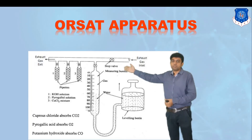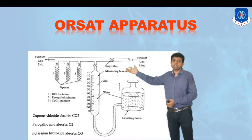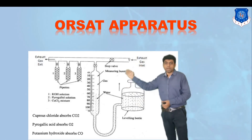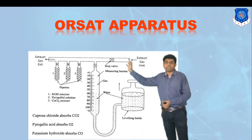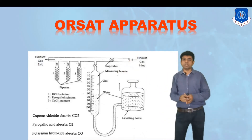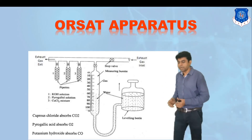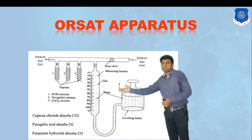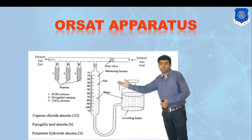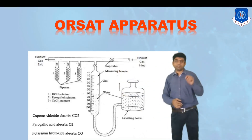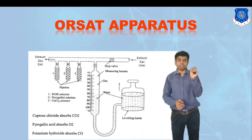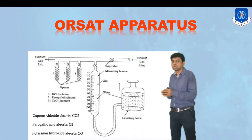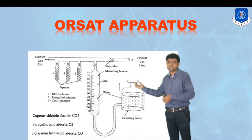Next, valve number one is closed and valve number two is opened. The water bottle is raised so that the 80 cc of exhaust gas passes into pipette number two, which contains pyrogallic acid solution. Pyrogallic acid has the tendency to absorb oxygen. When the water bottle is lowered, the gas returns to the measuring burette, now indicating 70 cc instead of 80 cc. The 10 cc difference is the volume of oxygen present in the exhaust gas.